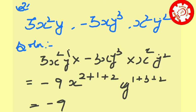Minus 9 x power 2 plus 1 plus 2 is 5. Then y power 1 plus 3 is 4, 4 plus 2 is 6. So that's all.